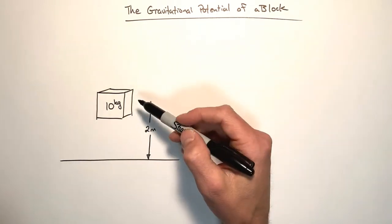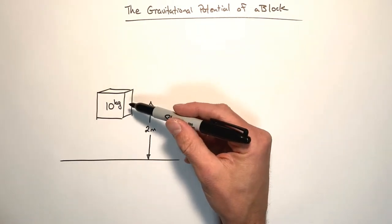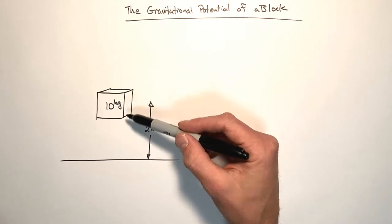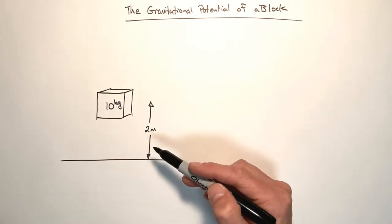Okay, in this problem we're going to go through and solve for the gravitational potential energy of this 10 kilogram block which is sitting two meters above the floor.